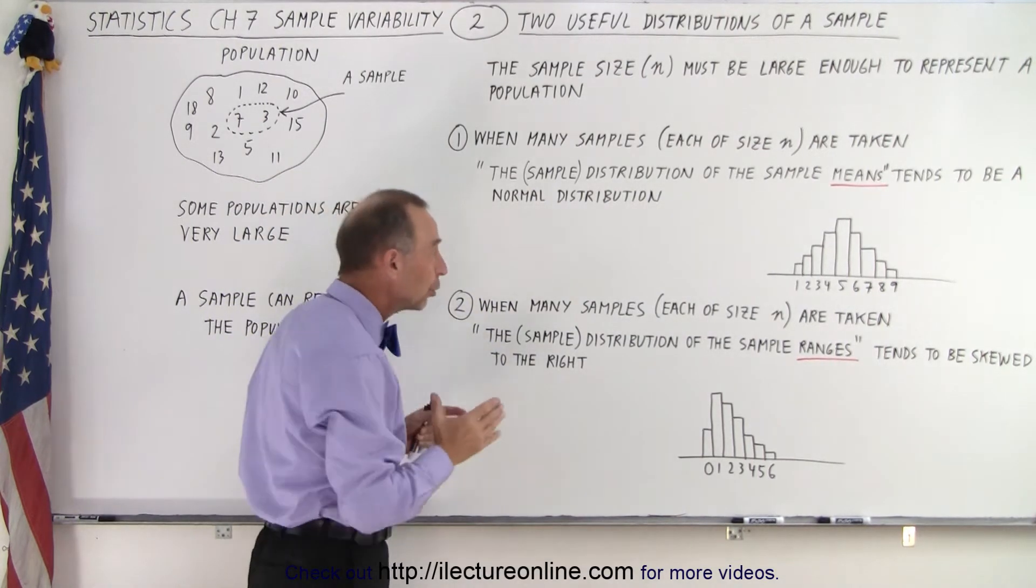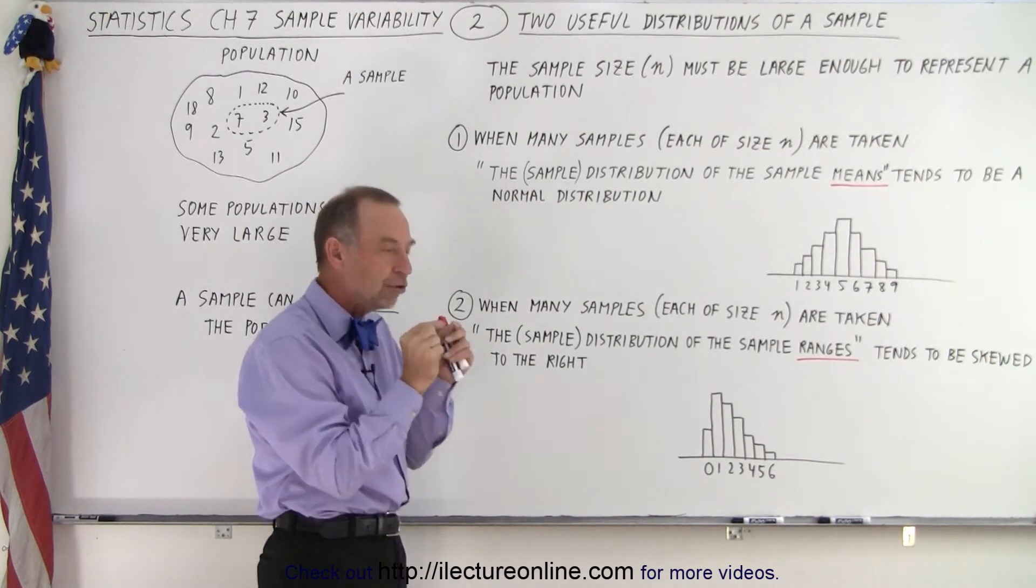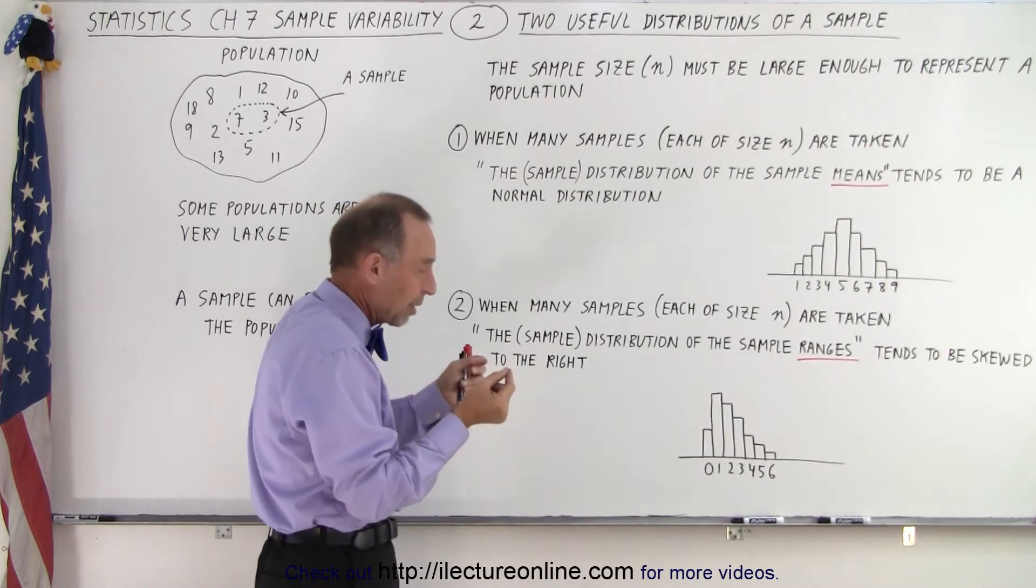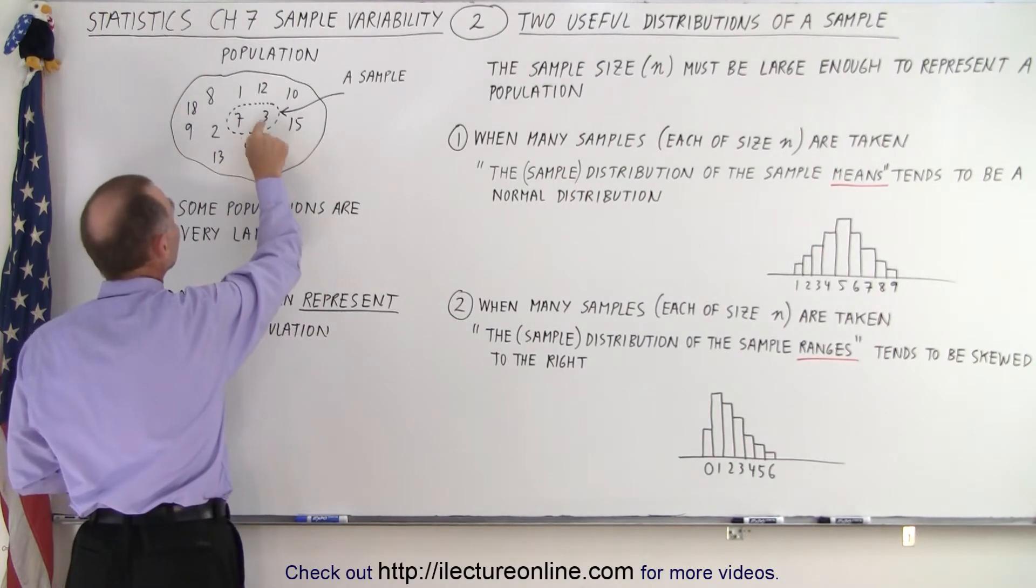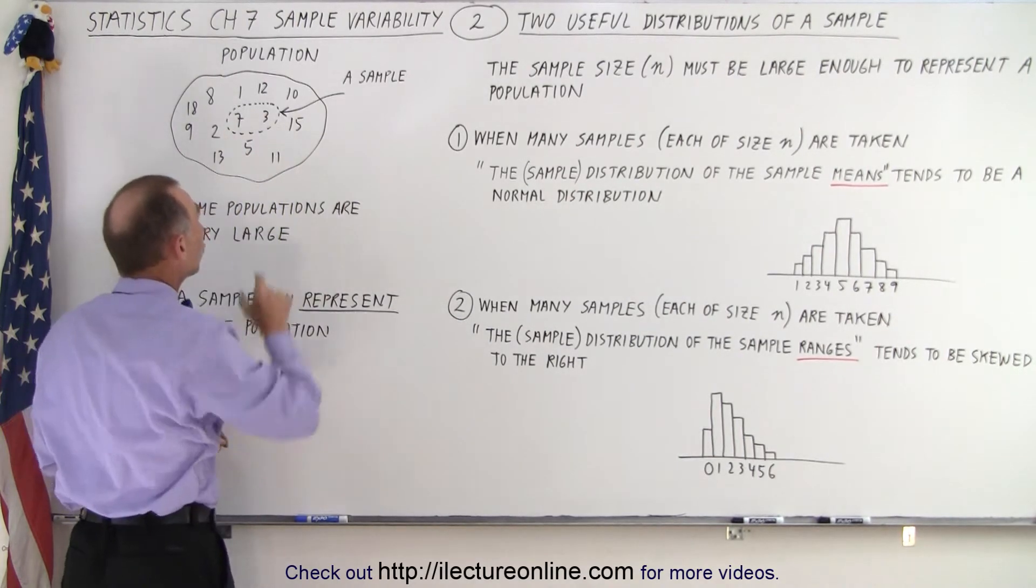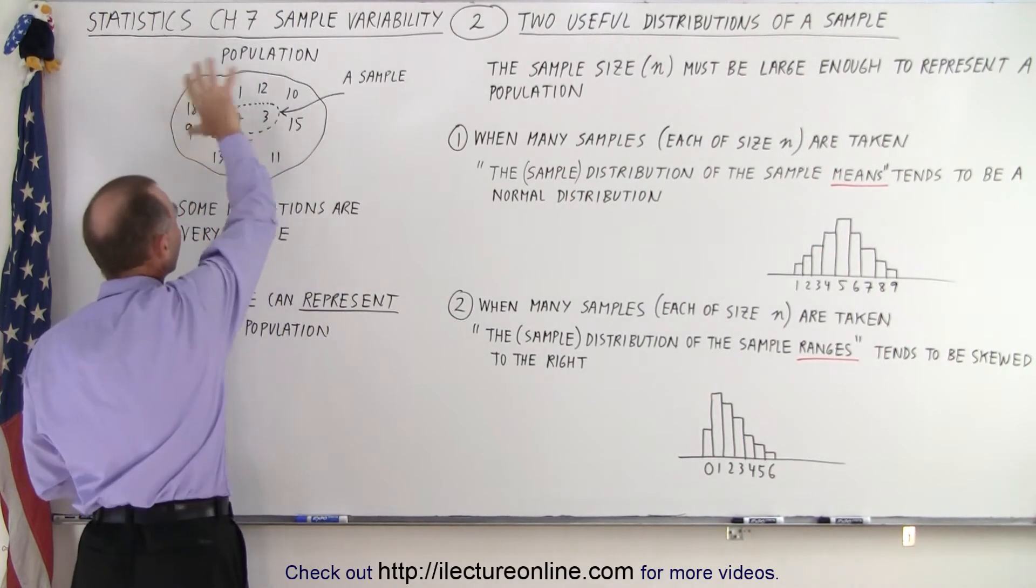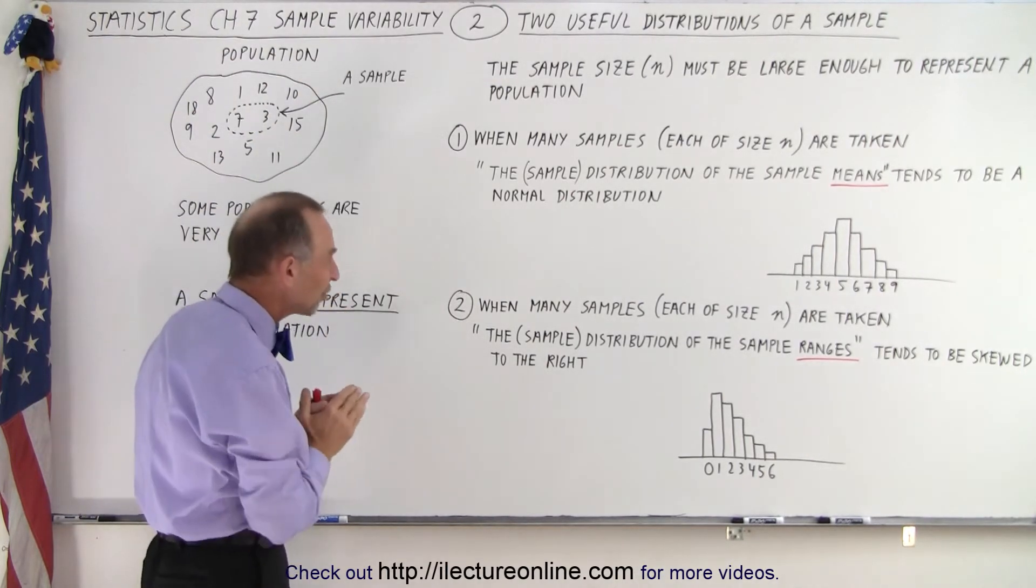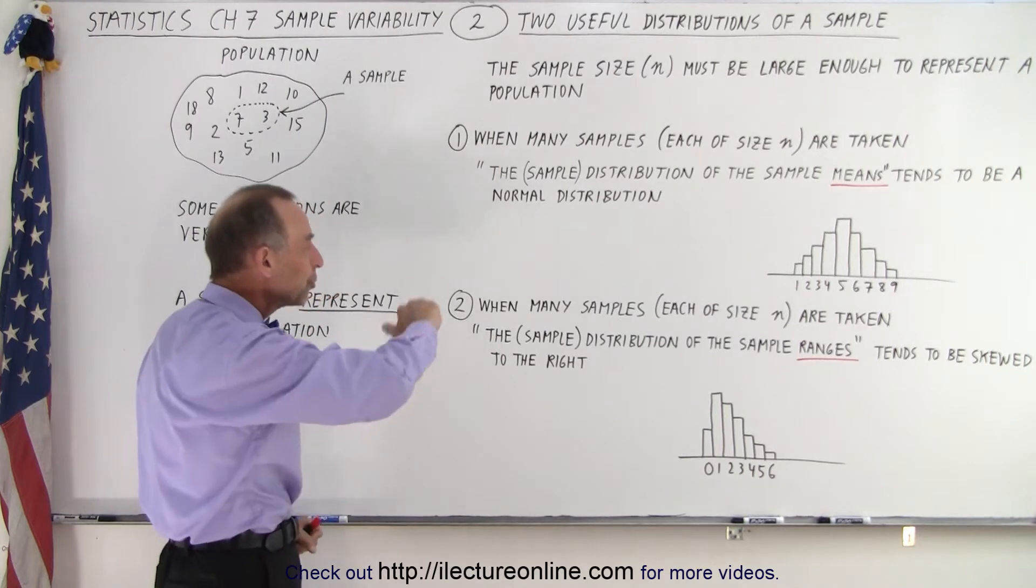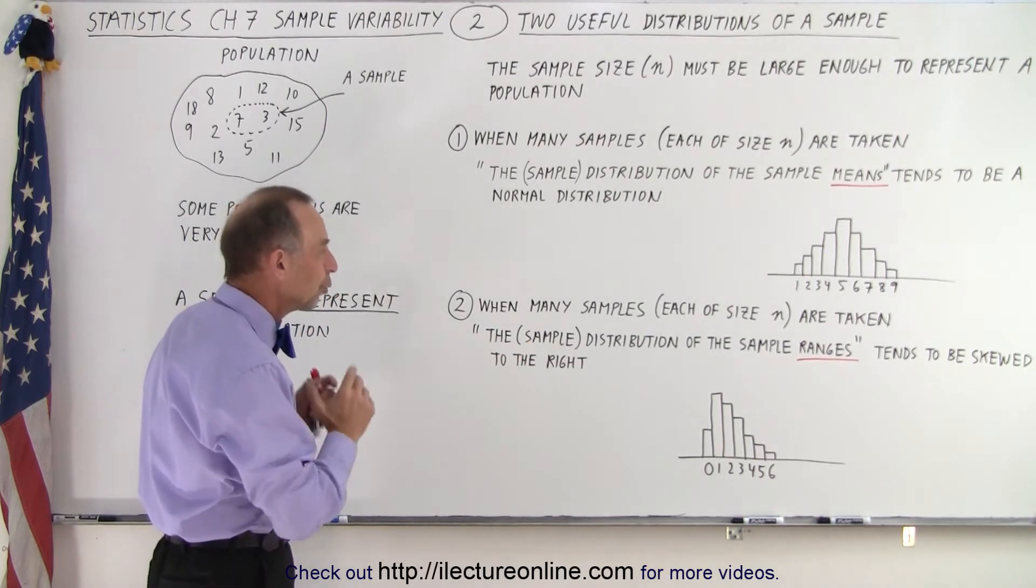Secondly, we can also take the ranges in each of these samples. For example, let's say we have a sample size of 2, and here we have 7 and 3, the range of that will be 4. So we take multiple samples of a large population, and we measure the range in each of those samples, and then we do a distribution of those ranges.